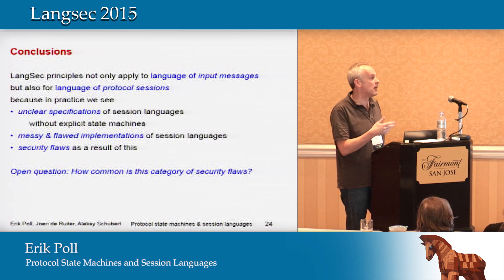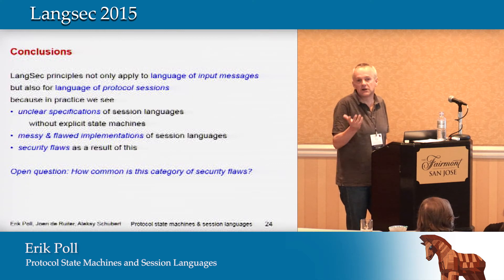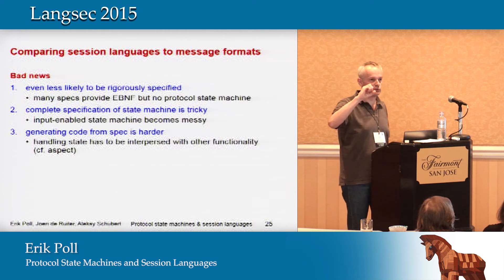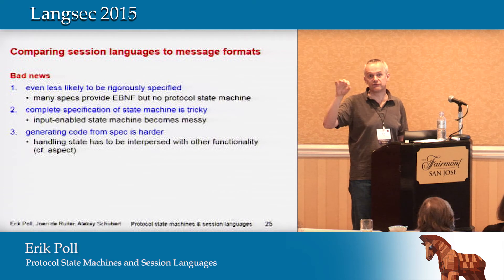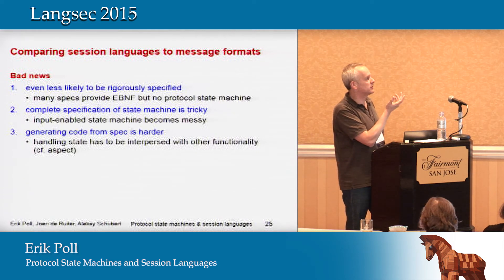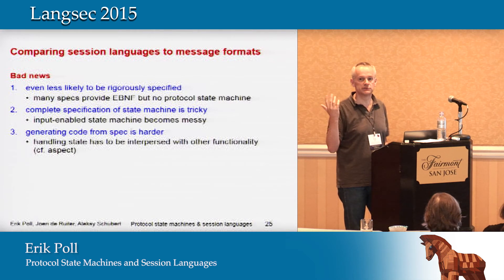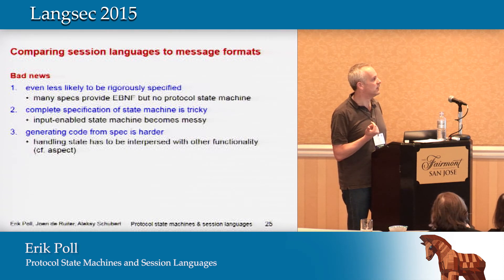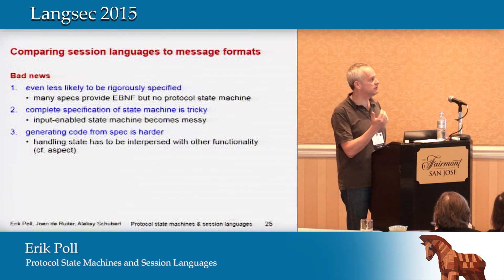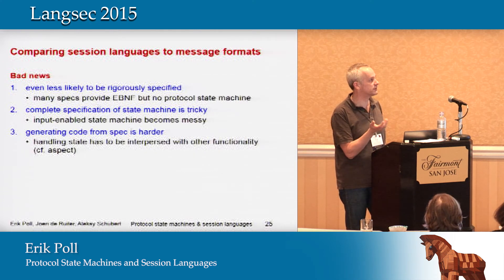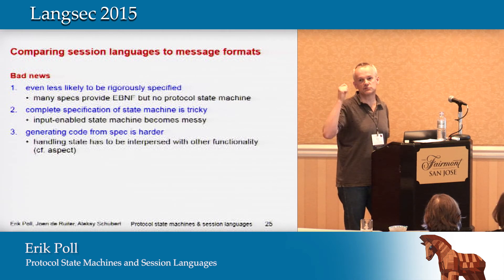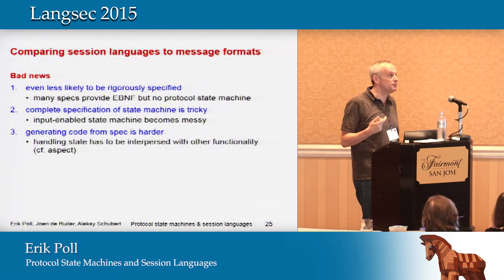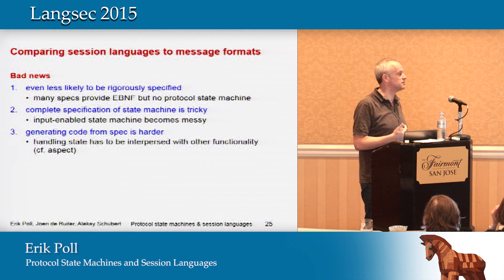What's not clear to me yet is how common this category of security flaws is, but my guess is there's more out there. Comparing session languages with message format languages: a lot of specs will have an EBNF somewhere in an appendix, but state machines are actually less likely to be rigorously specified. Giving a complete state machine is actually harder in most cases than writing an EBNF grammar, especially handling all the error transitions for an input-enabled state machine.